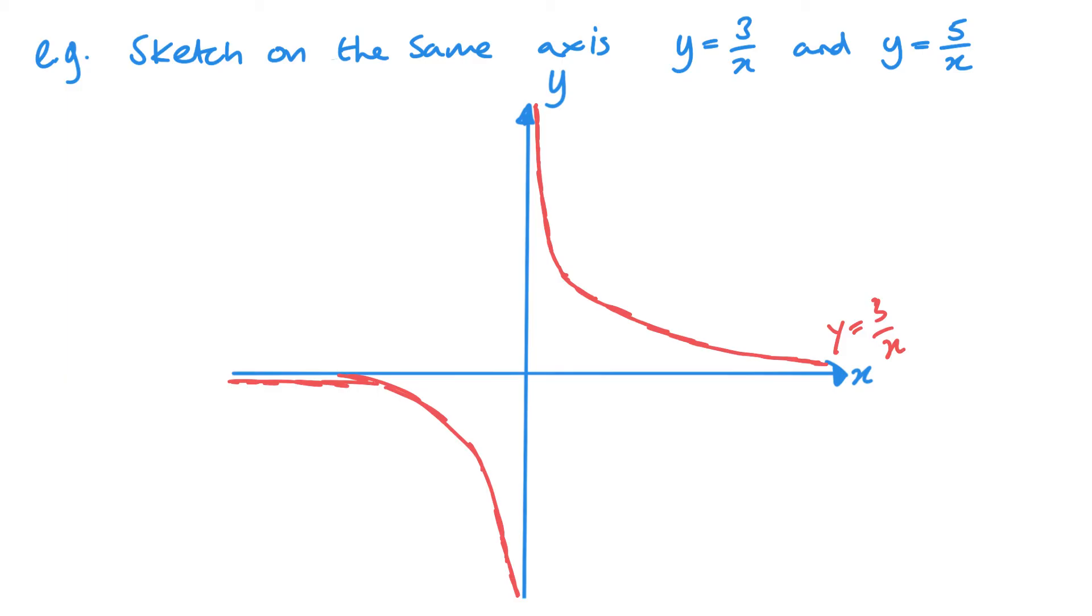Now I'll do the next one in black. Y equals five over x. Because of that number, that multiple of five, it's going to be a larger value. So it's not going to be as close to the axis initially. It's still going to head that way, but I just need to draw it a bit further away from my axis. And something like that. And as I said, you don't have to be perfect with these. It's about getting that shape.